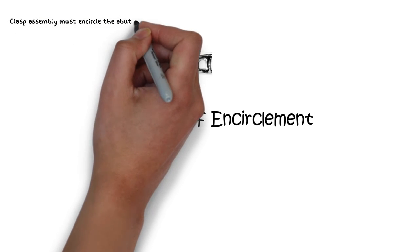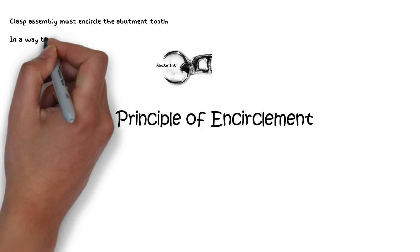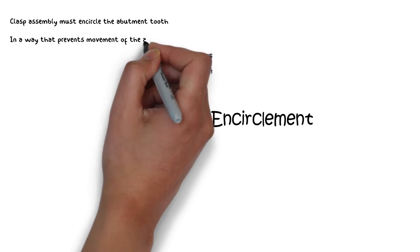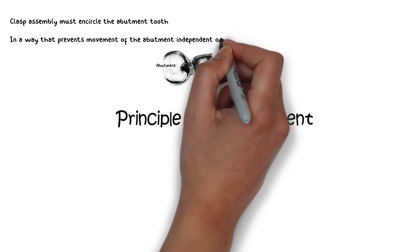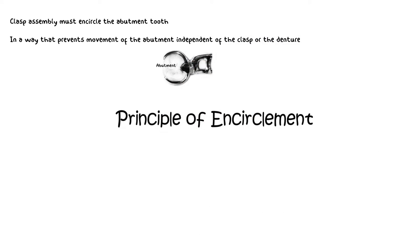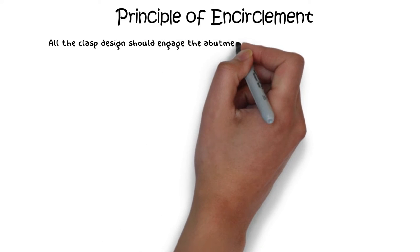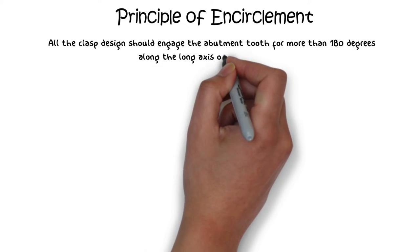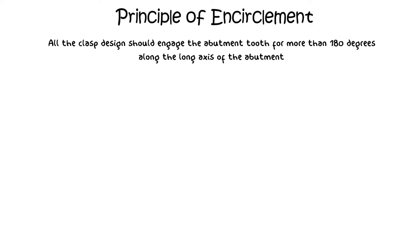The clasp assembly must encircle the abutment tooth in a manner that prevents movement of the tooth separate from the clasp assembly or retainer — only then will it provide adequate retention inside the mouth. In other words, the clasp should not allow movement of the denture separate from the abutment and vice versa, which would result in decreased retention or harm to the abutment tooth, leading to long-term failure. The principle of encirclement requires that all clasp designs engage the abutment tooth for more than 180 degrees along the tooth's axis, passing from above and below the bulkiest portion of the tooth.